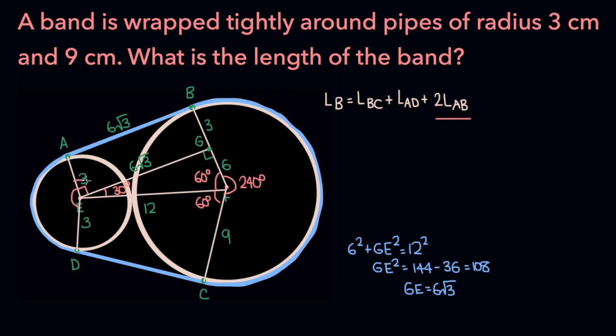And so this entire angle here is 120 degrees, which means this angle must be 120 degrees as well, because the figure is symmetric. Which means the angle of arc AD is 360 minus 120 minus 120, which is 120 degrees.